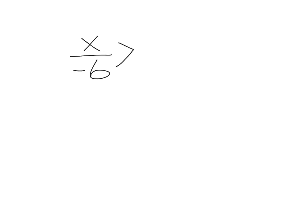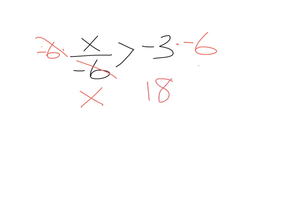Let me give you another example: x over negative 6 is greater than negative 3. To solve this, I multiply both sides by negative 6. The negative 6 cancels, leaving x. Negative 3 times negative 6 is positive 18. But because I multiplied by a negative number, the inequality changes direction, so I get x is less than 18.